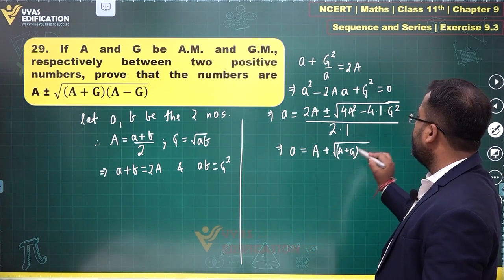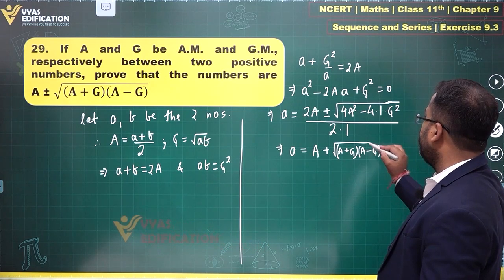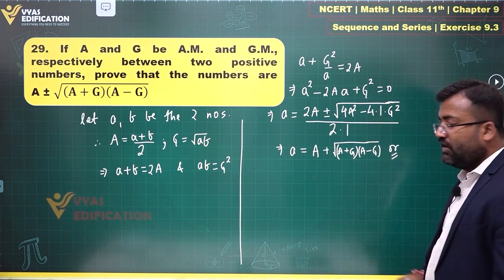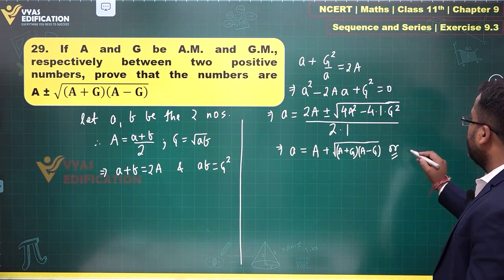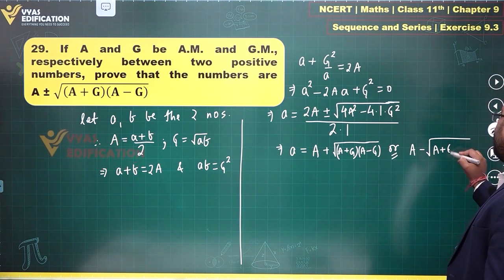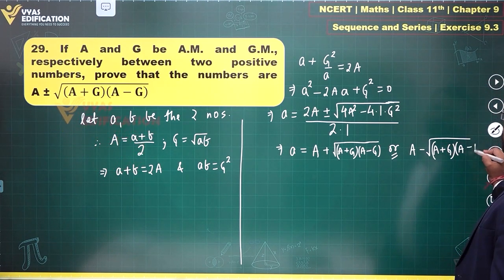a will be either this or the minus one, A - √((A+G)(A-G)).